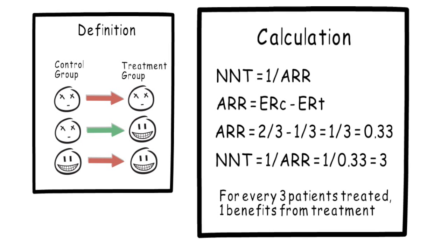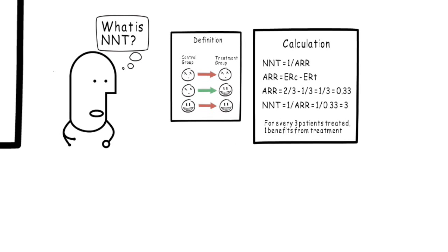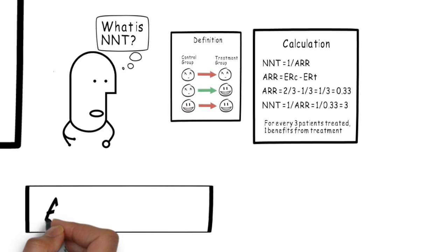An important side note here is that an NNT of three only tells you that one in three patients will benefit. It doesn't tell you what the outcomes are for the other two patients. They may benefit regardless or have poor outcome regardless. The NNT doesn't tell you that. So there it is, the definition and calculation of NNT. Pretty straightforward, I hope.